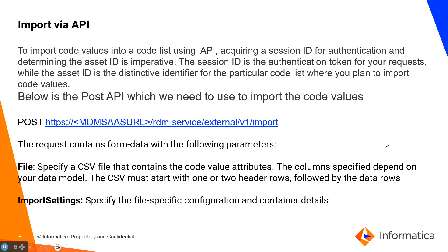Now, import via API. To import code values into a code list using an API, we need a session ID for authentication purposes. The asset ID is also important — it is the unique identifier for that particular code list, and the session ID is specific to your particular user.